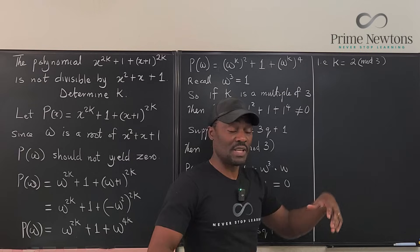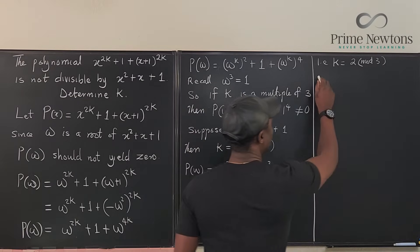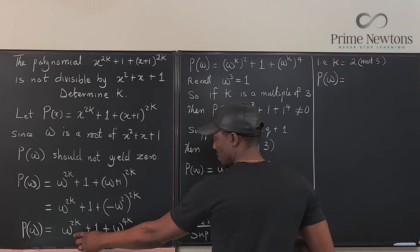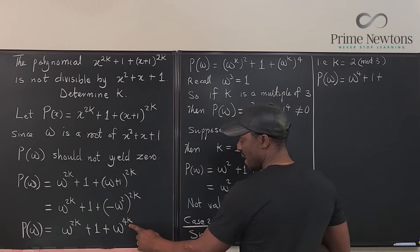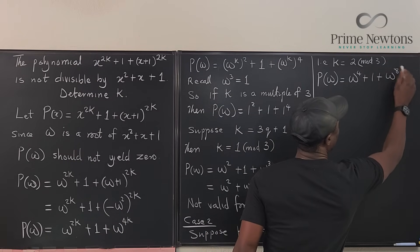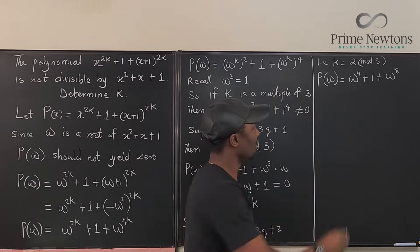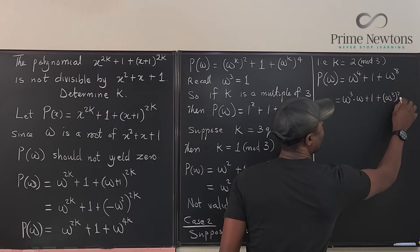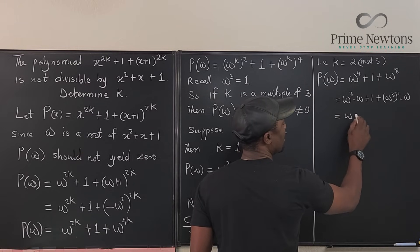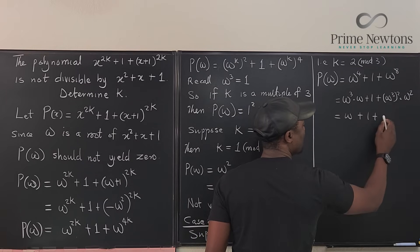So, if k is 2 mod 3, since we're saying that's the remainder, then we can as well go here and replace k with 2 because that's the effective portion of whatever the number is. So, we can say the polynomial of omega will be equal to omega to the 4th because this will be 2 times 2, omega to the 4th plus 1 plus, this is going to be omega to the 8th. But remember that this is going to be 1 because you're going to have omega cubed. This is omega cubed times omega plus 1 plus omega cubed squared times omega squared. So, what do we have of omega? Because this is 1. So, 1 times omega plus 1 plus, this is going to be 1 squared times omega squared. That's omega squared, which is the same thing as omega squared plus omega plus 1, which is still when you plug in omega into this.